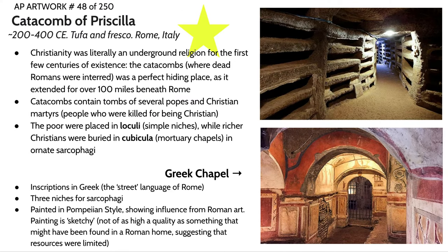The first AP artwork of Unit 3 is the Catacomb of Priscilla. Early Christians had to operate in secret due to Roman persecution, yet they were even spreading Christianity within Rome itself — underground, in areas called the catacombs. The catacombs were a series of tunnels and underground pathways beneath the city of Rome spanning over a hundred miles. Since people only went down there to bury someone, it was the perfect hiding place and ideal location for the first underground churches.